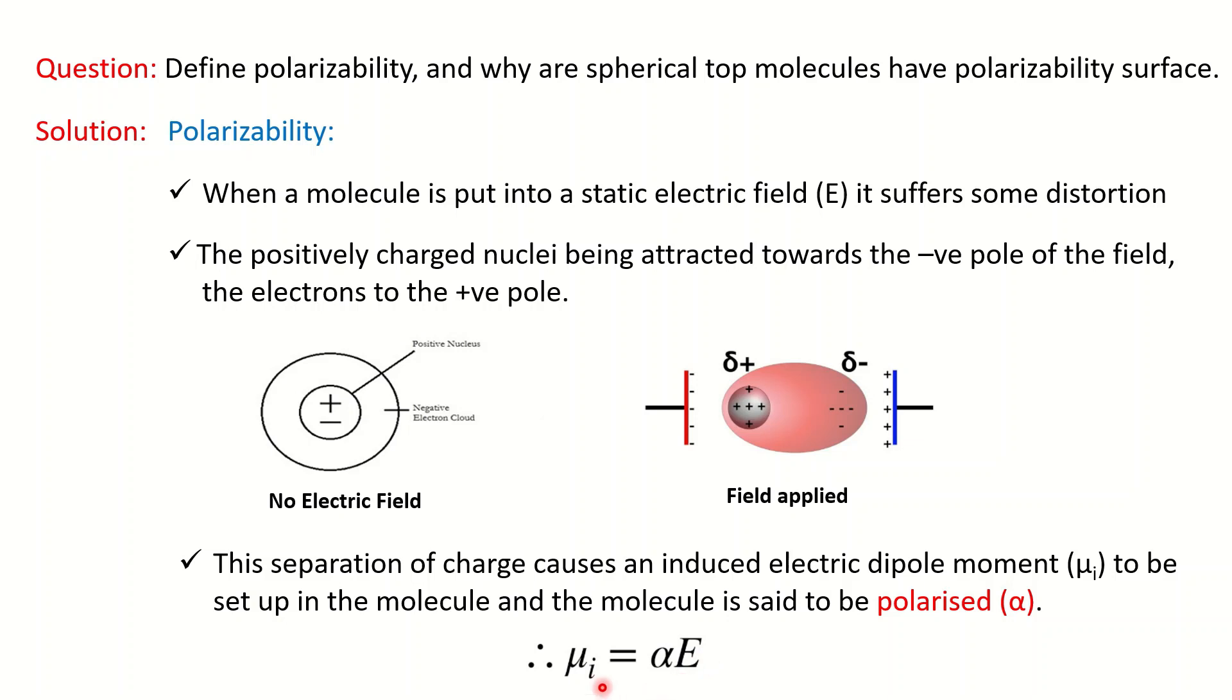If you know the electric field and the amount of induced dipole moment, you can calculate the polarizability. Or if you know the polarizability and electric field, you can calculate the induced dipole moment. This is the definition of polarizability.